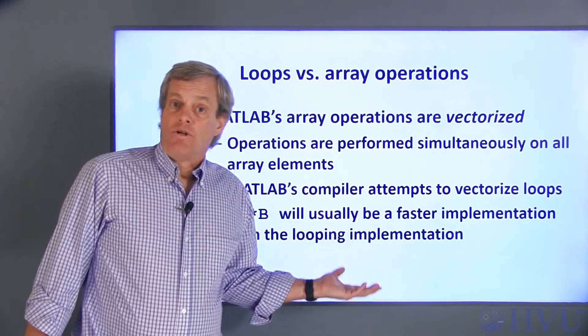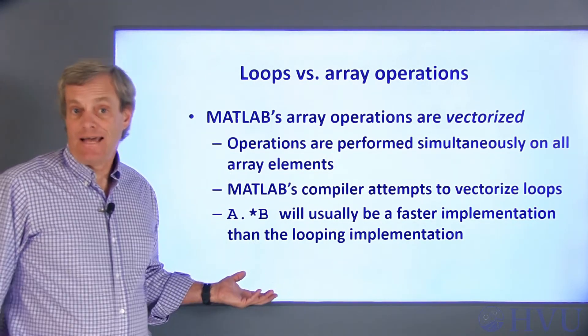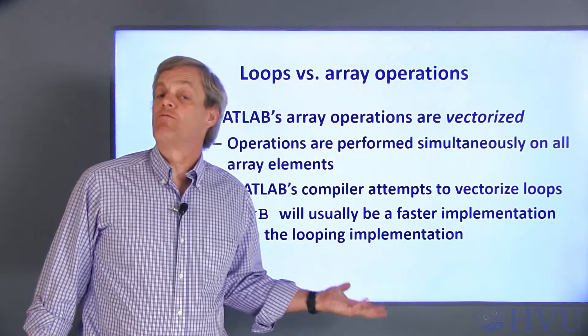So in general, multiplying the two matrices of our previous example can be done faster by using dot times to do the multiplication rather than for loops.